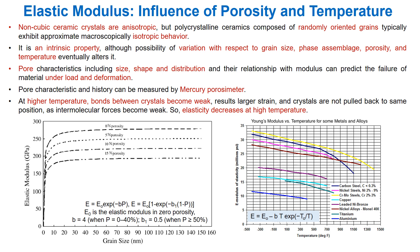Despite the cumulative discussion, some fundamentals of elastic modulus — influence of porosity, temperature, measuring protocols, and a few data points — may provide better insight. Usually, non-cubic crystals are anisotropic, but polycrystalline ceramics composed of randomly oriented grains typically exhibit approximately isotropic behavior. It is an intrinsic property because it depends on bond strength, although grain size, phase assemblage, porosity, and temperature can alter it for bulk material composed of several particles. Pore characteristics including size, shape, and distribution, and their relationship with modulus, can predict the failure of material under load and deformation.